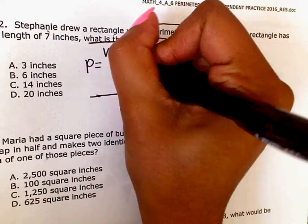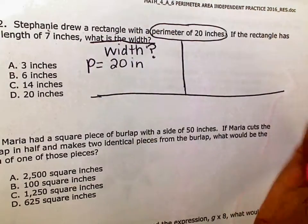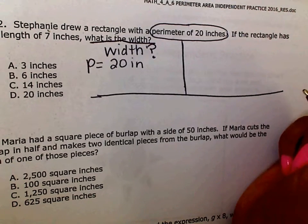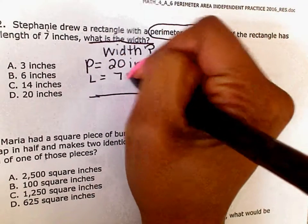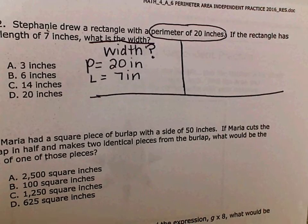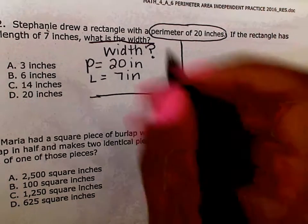Okay, so what else do we know? And what do you know about perimeter? What is the formula?